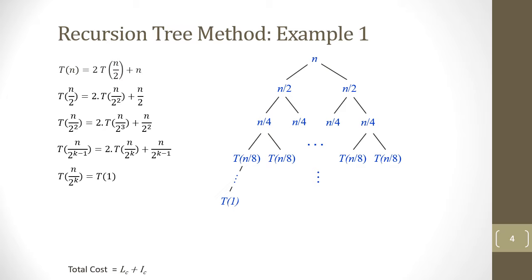Before we can find the value of LC, we need to figure out the value of k in terms of n. From the equation, n over 2 to the power of k equals 1, so n = 2^k, and taking log base 2 of both sides gives k = log₂(n). Since the cost of an individual leaf node is 1, and the number of nodes doubles at each level, at the k-th level we have 2^k leaf nodes. Plugging in the value of k, the leaf cost equals n.